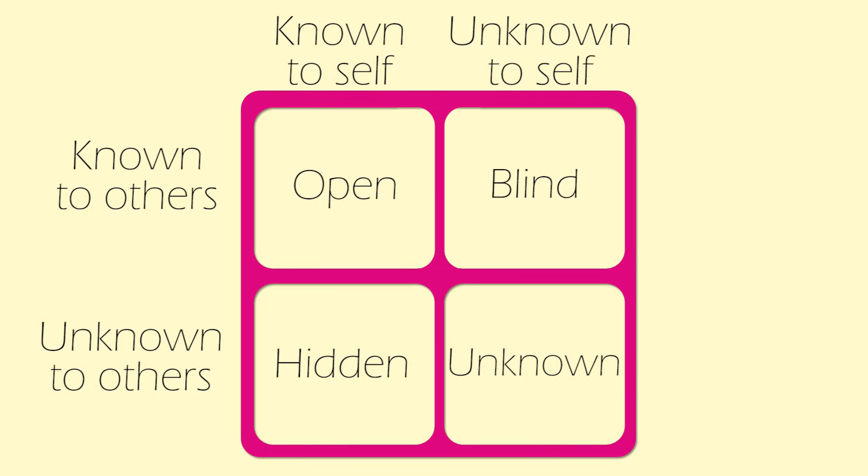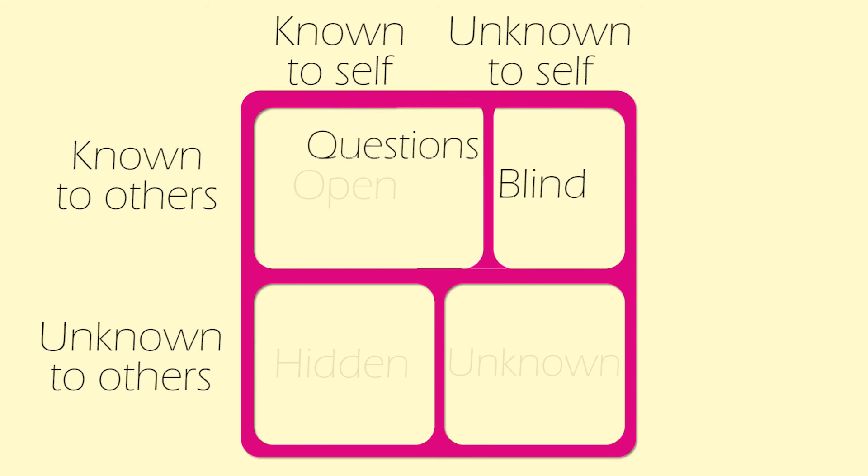So the relationship of trust is really important. The blind area of the Johari window shows us that asking the right question at the right time can provoke a new insight for the learner. And sometimes giving direct feedback can achieve the same goal.